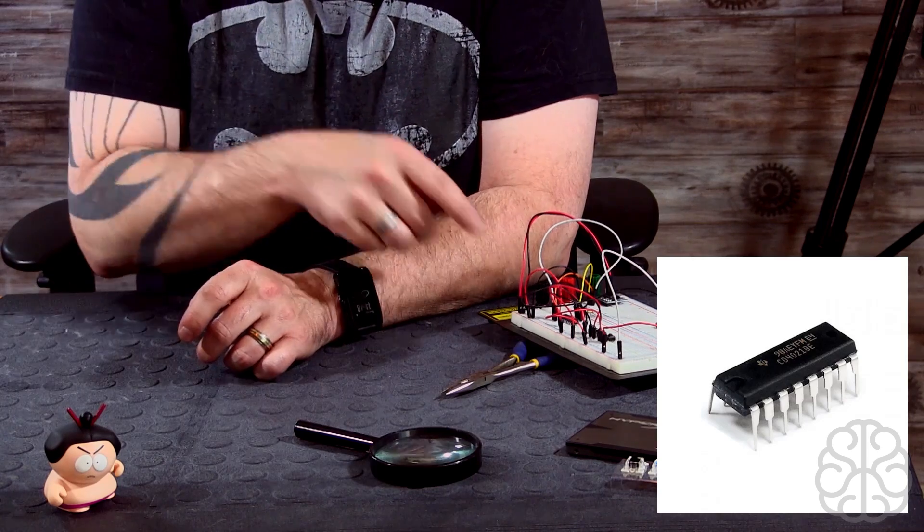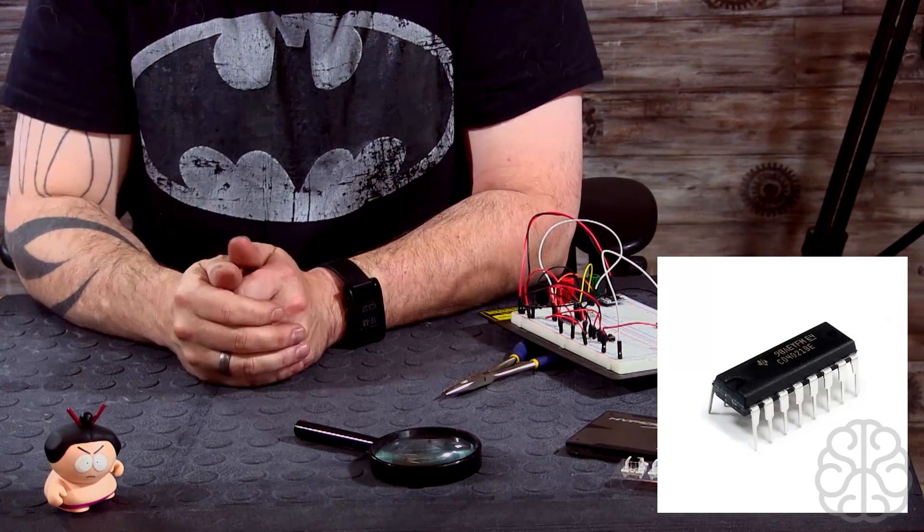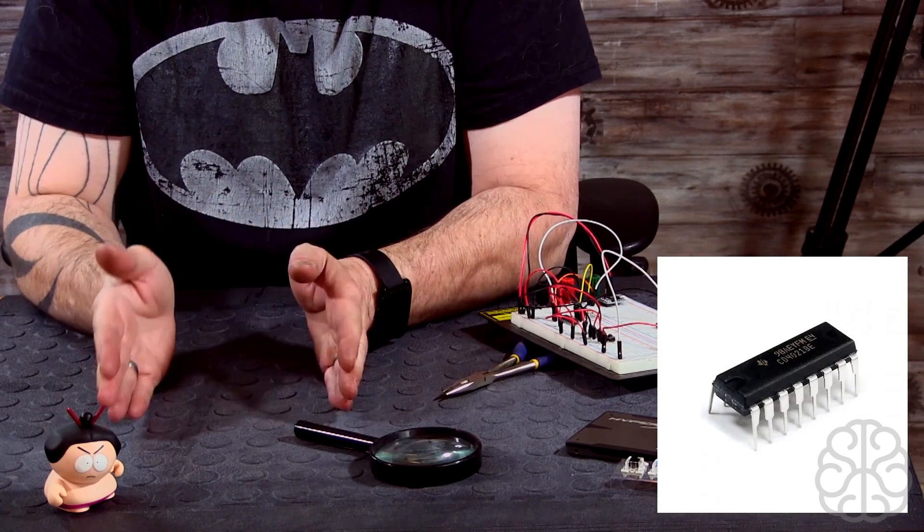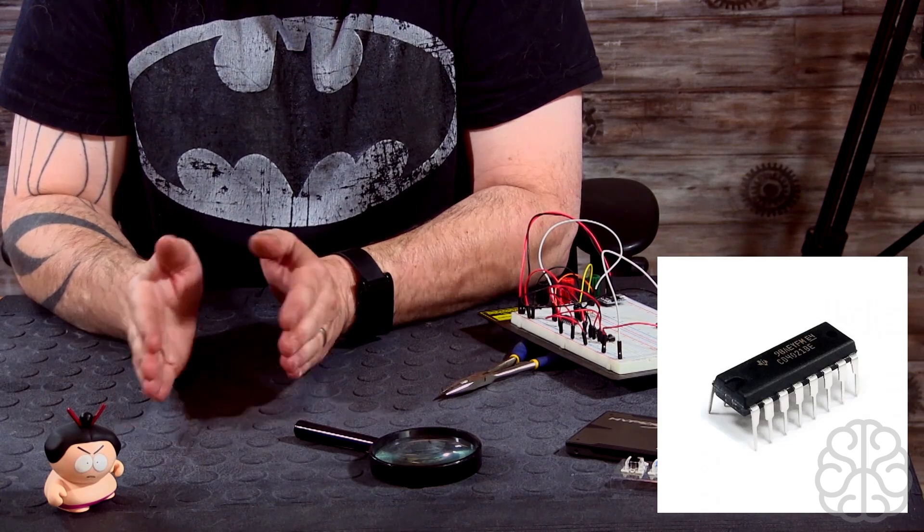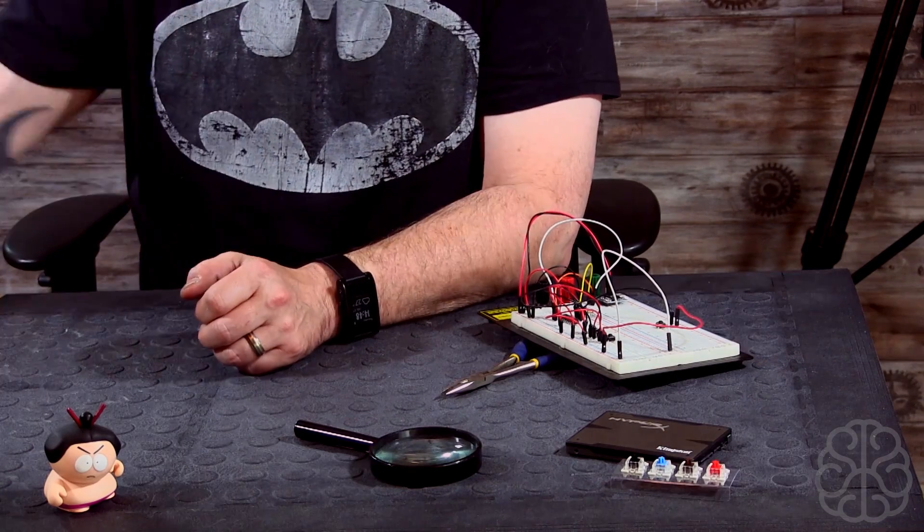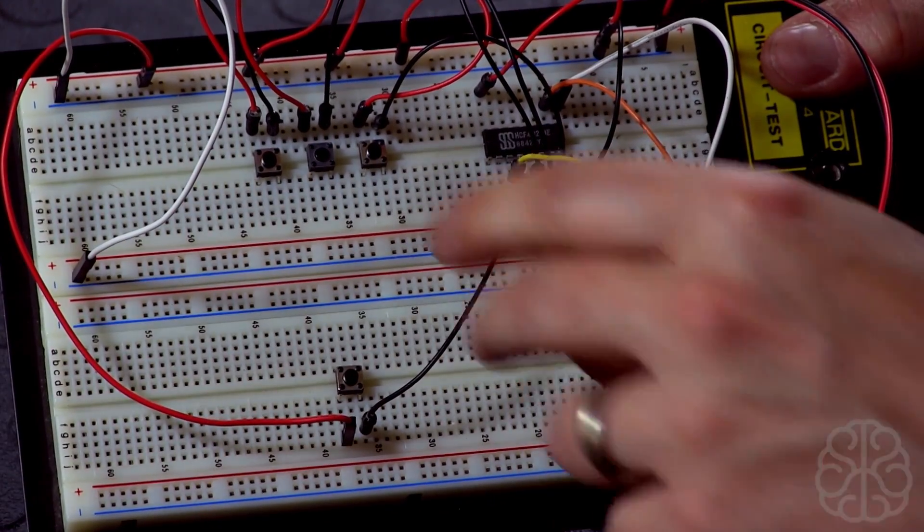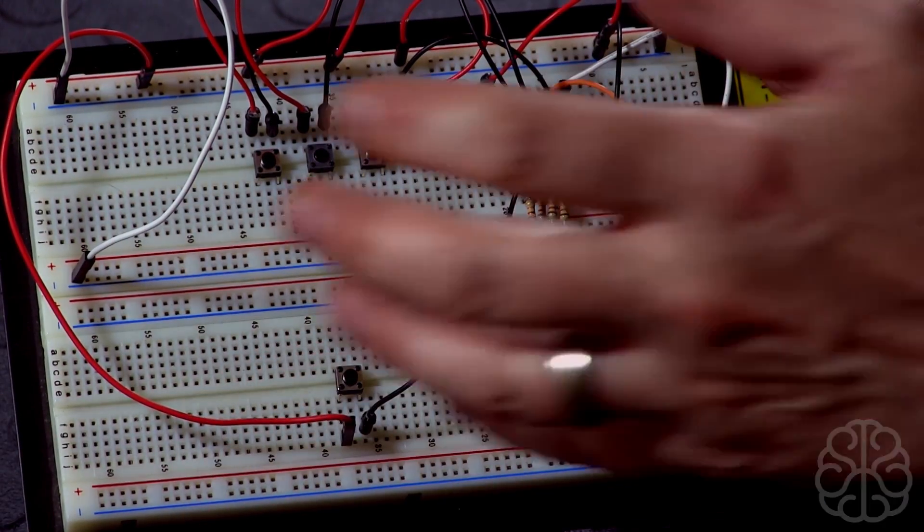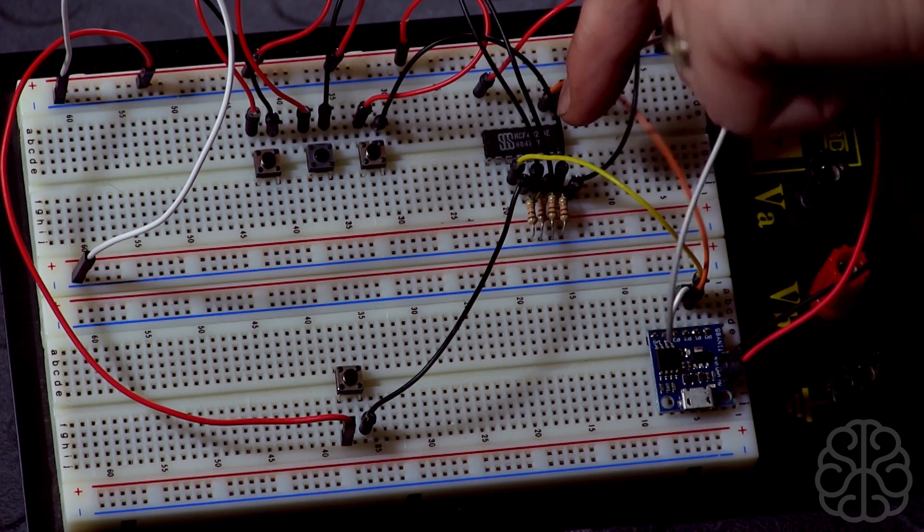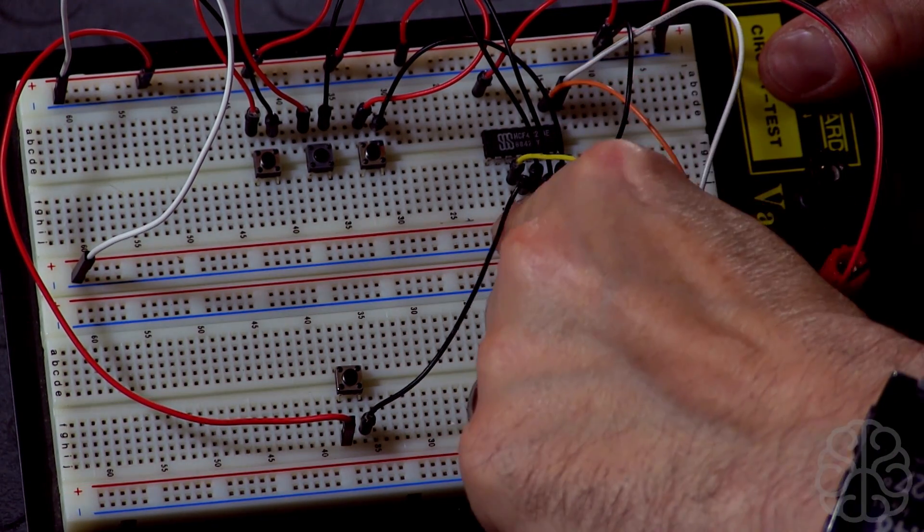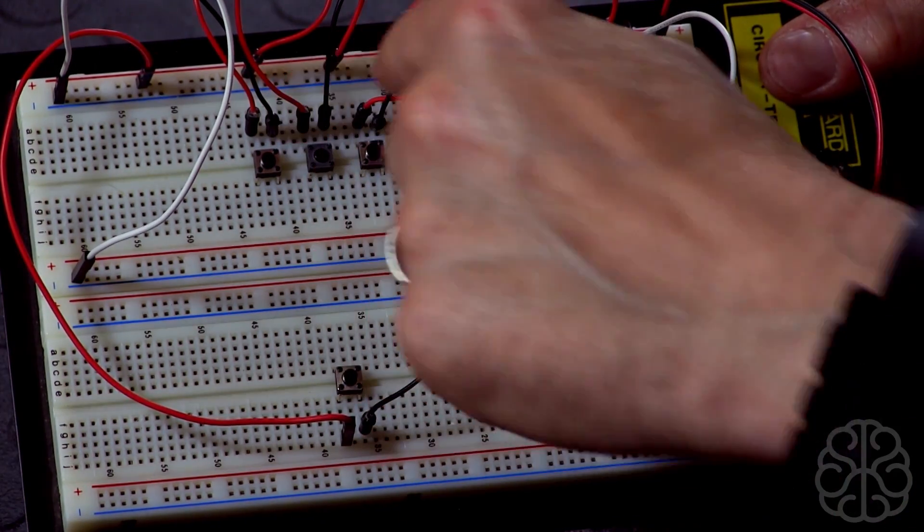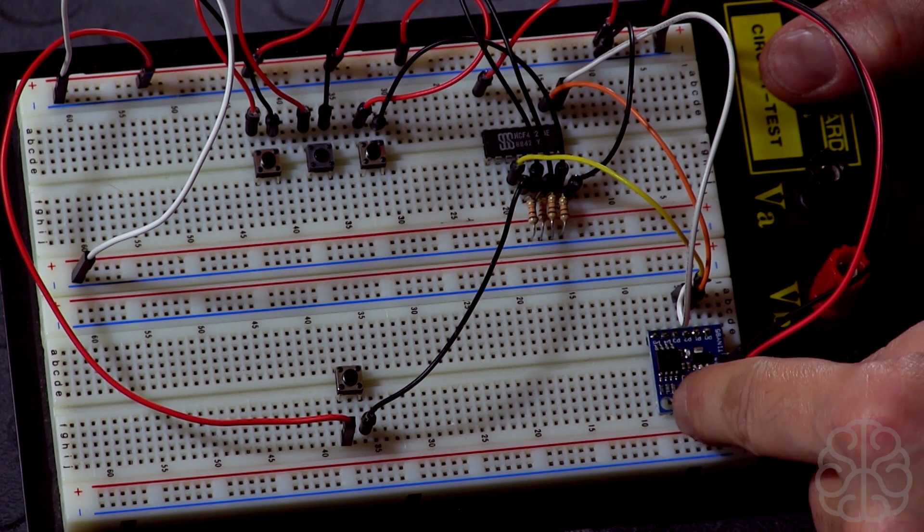What we're gonna use today is tact switches. We'll read up to eight tact switches using only three pins. Let me show you the breadboard. The way this is set up, we got four buttons on this one but you can have up to eight. Here's the CD4021 right here with four little 10k resistors for each button, and here's the DigiSpark.